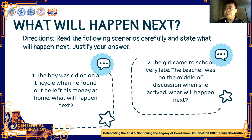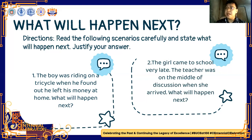Scenario number two: the girl came to school very late. The teacher was in the middle of discussion when she arrived. What will happen next? The girl might be scolded by the teacher because of the behavior she did, because coming very late isn't ethical to classroom rules and regulations.